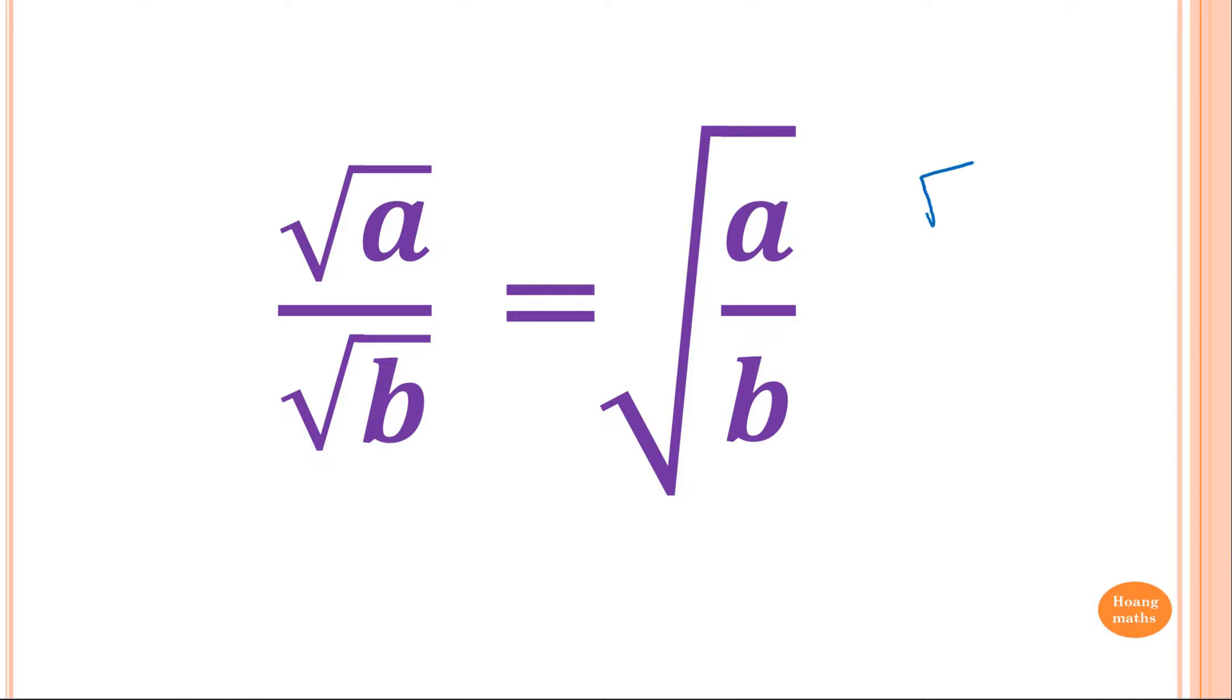For example, square root of 6 over square root of 3 is just the same as 6 over 3, but square root the whole lot. So 6 over 3 is 2. So your answer is square root of 2. That's how it works.